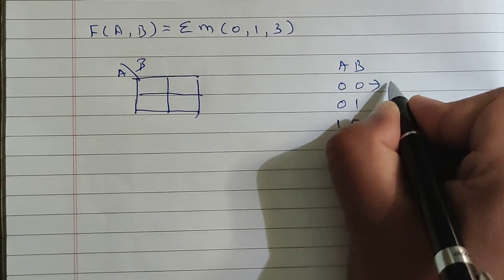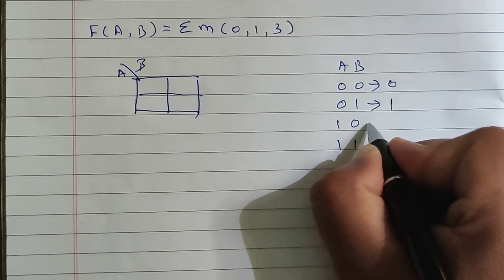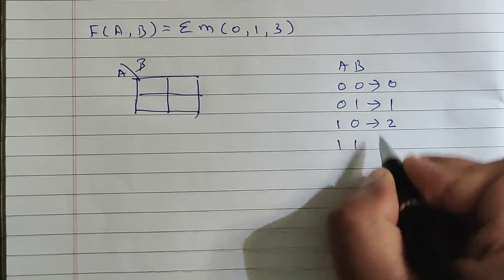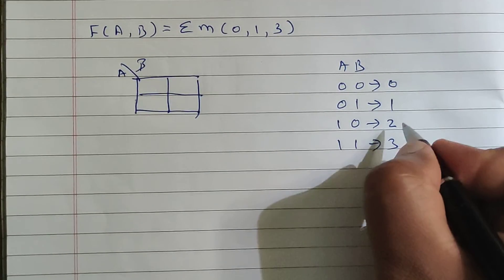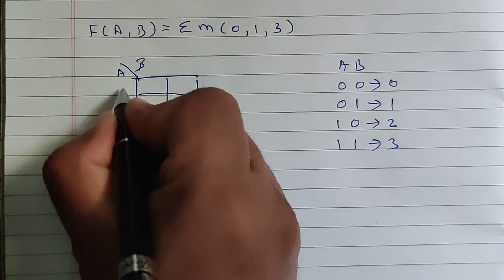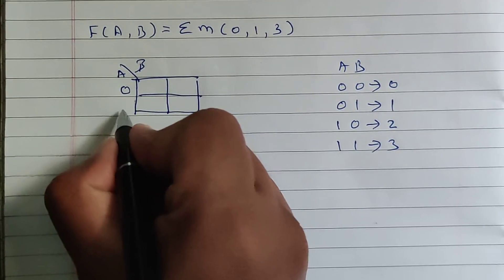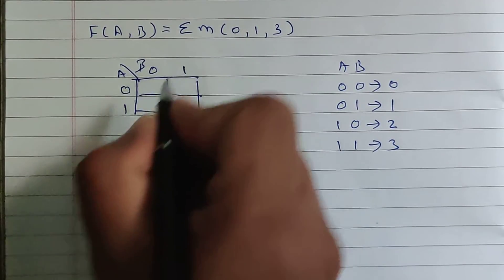In decimal, 0 0 is 0, 0 1 in decimal is 1, 1 0 in decimal is 2, and 1 1 in decimal is 3. So these are four values which AB can take in decimal pattern. A can take only two values either 0 or 1, B can take two values either 0 or 1.